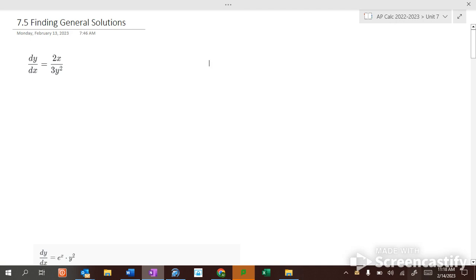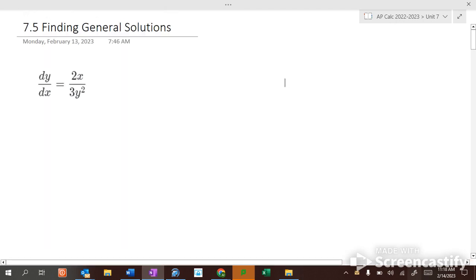Okay, finding general solutions to differential equations today. So we have to do what's called a separation of variables. Gotta get all the y's on the one side and the x's on the other. So to get the y's on one side and the x's on the other, we multiply by 3y squared and we multiply by dx on each side. So we'll wind up with 3y squared dy equals 2x dx.